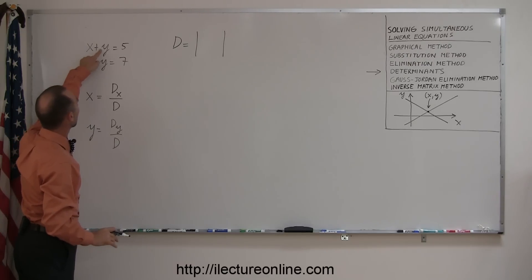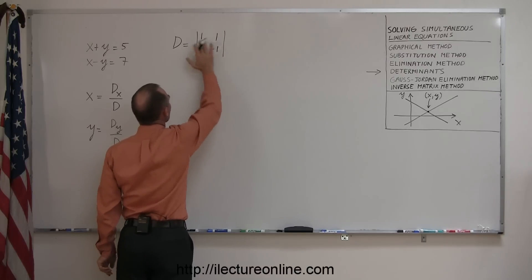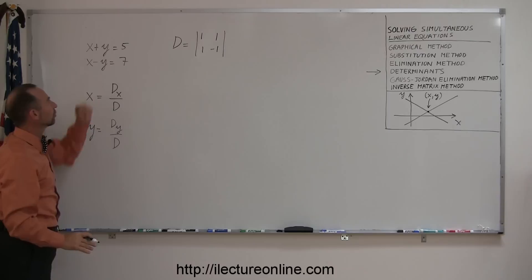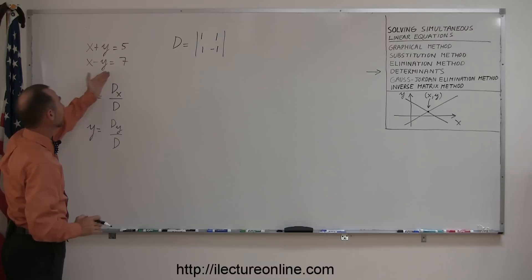In this case we have 1, 1, 1, and negative 1. We write what we call the elements, which represent the coefficients of the two variables in each of the two equations. In order to solve the equation this way, you have to write it in this format with the x and y on one side and the numbers on the other side.